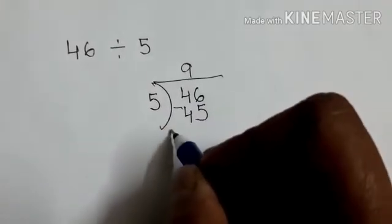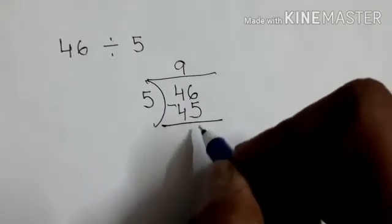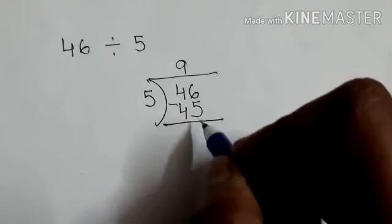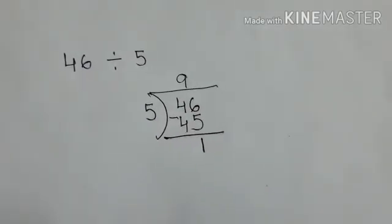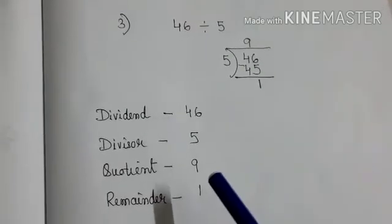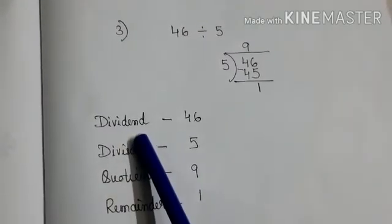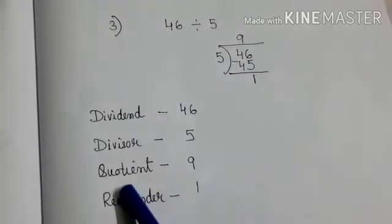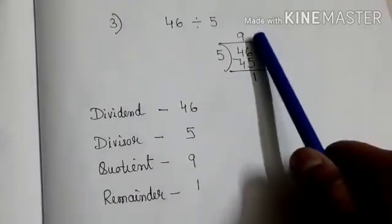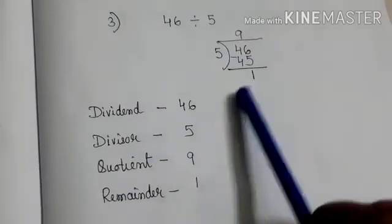Then we have to subtract. And we will get 6 minus 5. 1 as the remainder. Now see children. We have written our dividend as 46. Divisor 5. Quotient 9. And remainder 1.